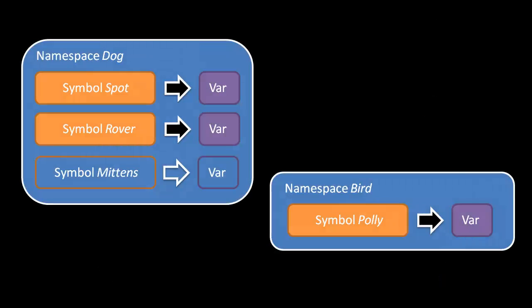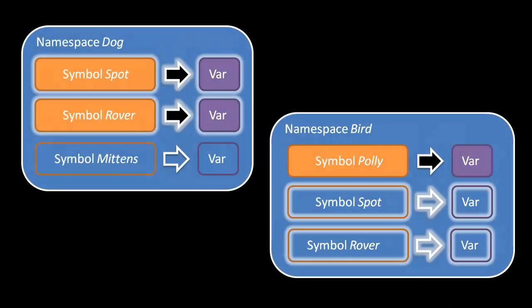Now let's say we have this other namespace called bird and it has a single interned mapping with the symbol polly. If we then refer the mappings of the namespace dog into the namespace bird this is what we get. Only the interned mappings of dog end up as referred mappings in bird. So the referred mapping mittens in dog is not referred into bird, just spot and rover. So now that we've done this when bird is our current namespace we can use spot and rover from the namespace dog without having to qualify their names. You don't have to write dog slash spot, you can simply write spot.